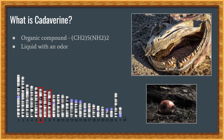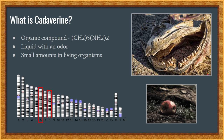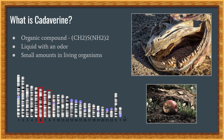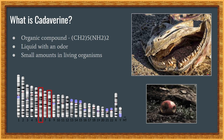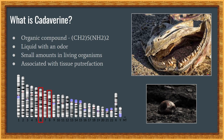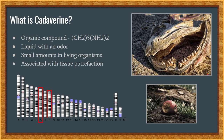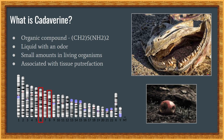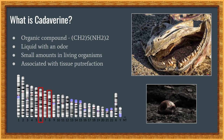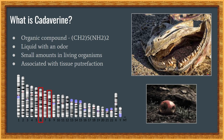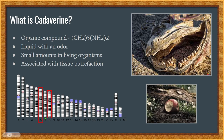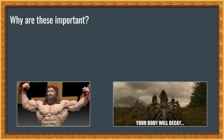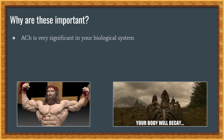Cadaverine is a colorless liquid with an unpleasant odor. It is present in small quantities in living organisms and is often associated with the putrefaction of animal tissue. In humans, molecular modeling and docking experiments have also shown that cadaverine fits into the binding pockets of the human TAR6 and TAR8.